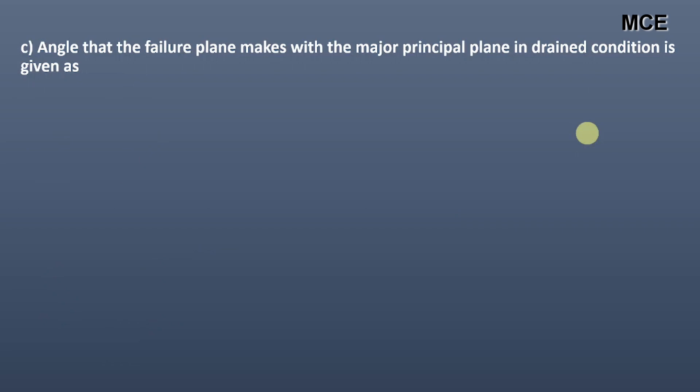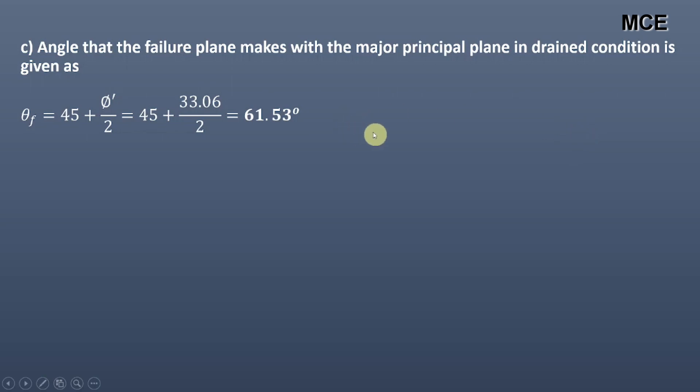The angle that the failure plane makes with the major principal plane in drained condition is given as θf equal to 45 plus φ' divided by 2, which is equal to 45 plus 33.06 divided by 2, which is equal to 61.53 degrees. This represents the angle of the failure plane with the major principal plane in drained conditions.